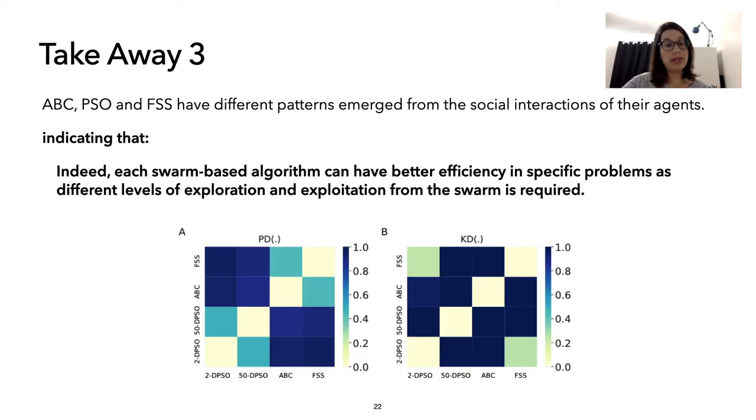Finally, even though it's very complex to choose which swarm-based technique is better for each particular problem, and it seems that the literature wants to elect one best algorithm, from our results, FSS, ABC, and PSO seem to be useful for a different set of problems, as they display different patterns of social interactions.